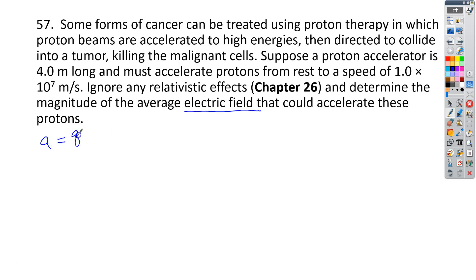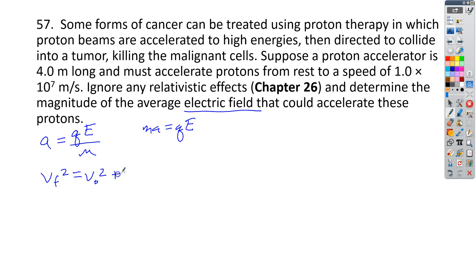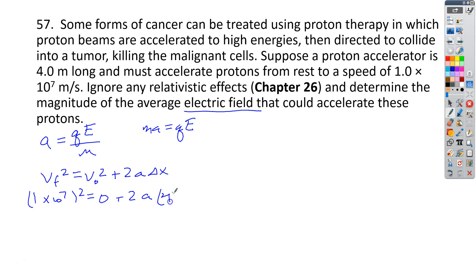They want us to find the average electric field that could accelerate the protons to that speed. Acceleration equals Q times E all over M, which comes from MA equals QE. First, we use the kinematic equation: final velocity squared equals initial velocity squared plus 2 times acceleration times change in position. The final speed is 1 times 10 to the 7th, initial speed is 0, and the distance is 4 meters. Solving for A gives 1.25 times 10 to the 13th meters per second squared.